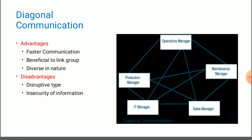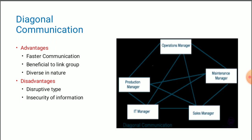Moving to the disadvantages of diagonal communication. The first disadvantage is that it is disruptive in type. This method of formal communication will create some disruptions in the process of communication. As there are no restrictions, no formalities, no rules and regulations, there is a chance of disturbances and disruptions. The second disadvantage is insecurity of information. As there is no certain flow, whatever information is passed from manager to the concerned employee, there may be a possibility of insecurity of that information.